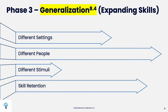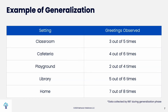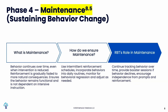Generalization means moving the intervention into a different setting, and possibly with different people. If the teacher is out for a week and there's a substitute, you might go in to make sure the behavior continues. You might also go into the art class or music class to check if it's working there. In generalization, you take data in different settings — classroom, library, and home — to see if the intervention worked and whether you need to intervene in that new setting.